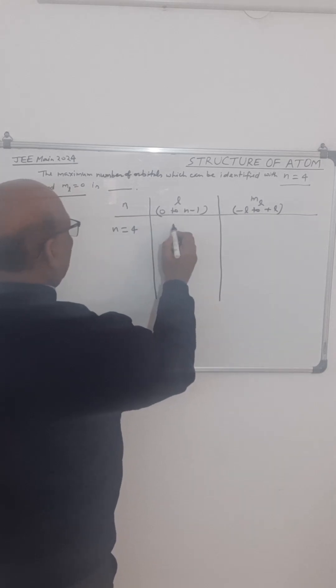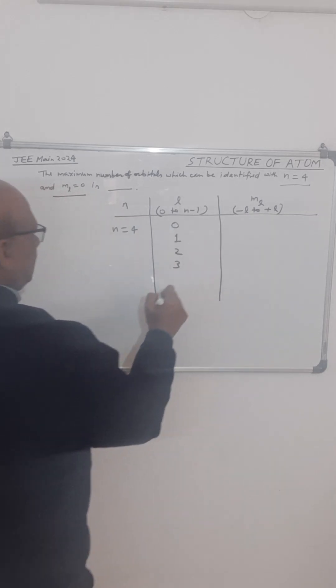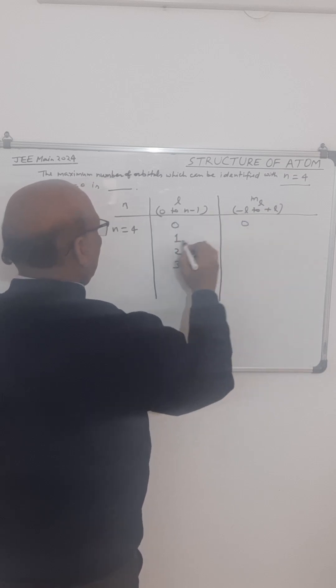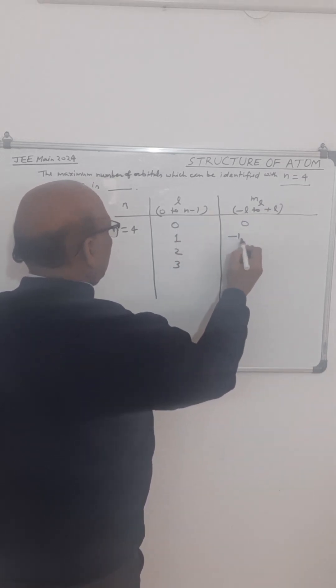For n equal to 4, L can have 0, 1, 2, and 3. The magnetic quantum number ml for L equal to 0 will be 0. For L equal to 1, it will be minus 1, 0, plus 1.